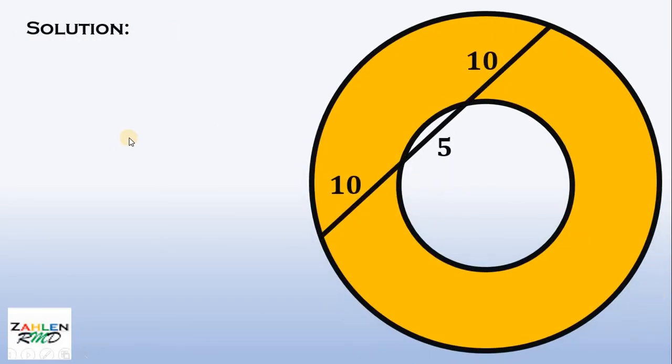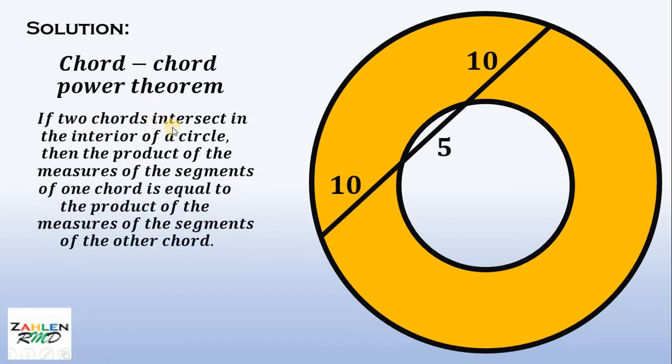To answer this problem, we will use one theorem, which is the chord-chord power theorem. This theorem states that if two chords intersect in the interior of the circle, then the product of the measures of the segments of one chord is equal to the product of the measures of the segments of the other chord.